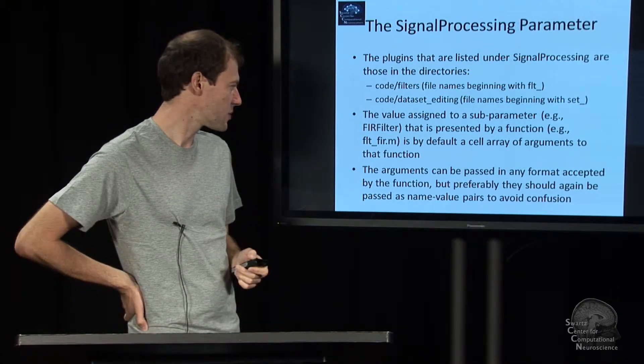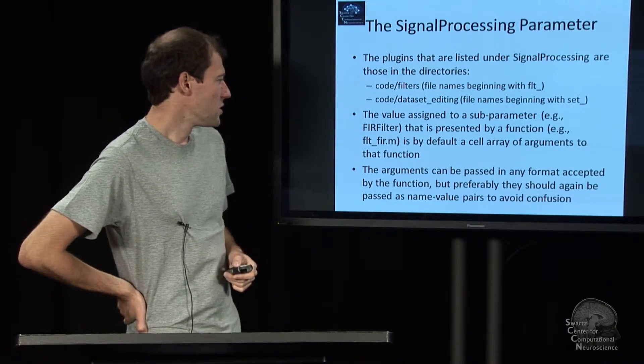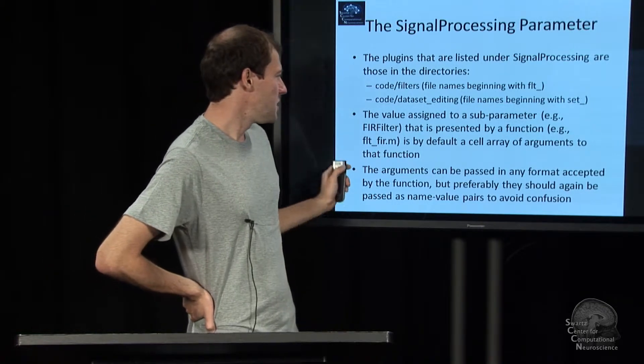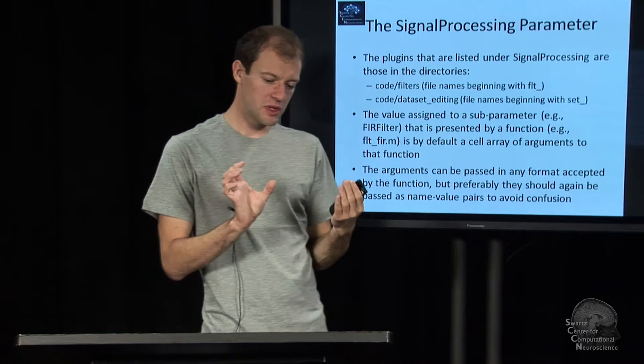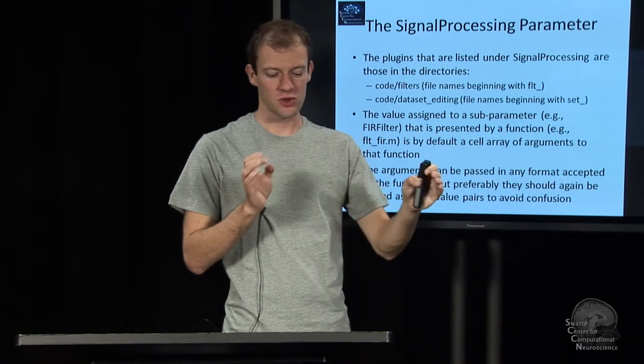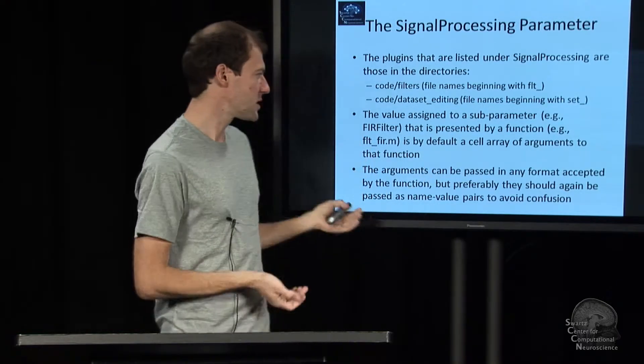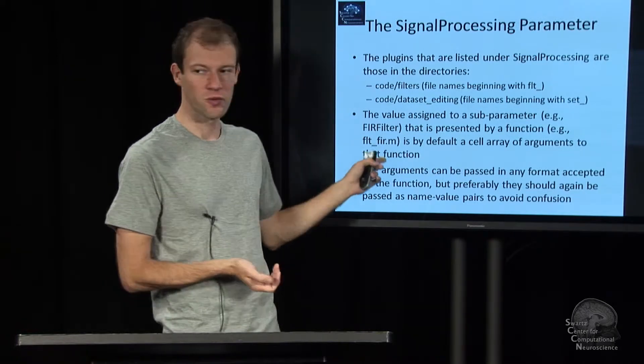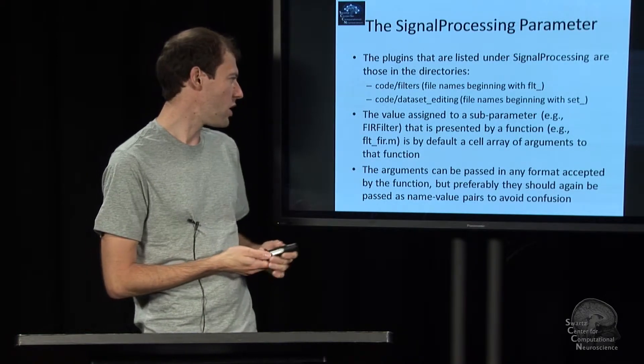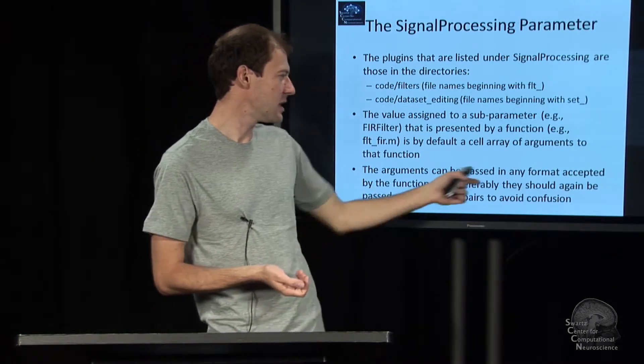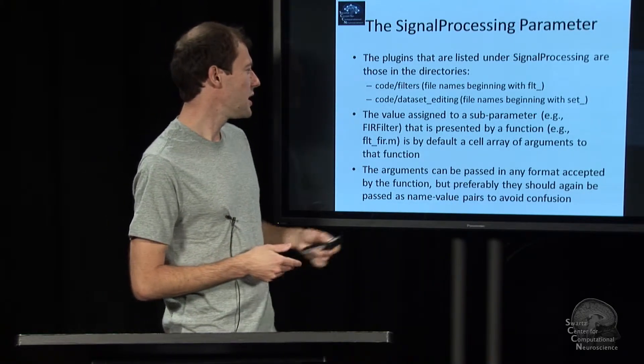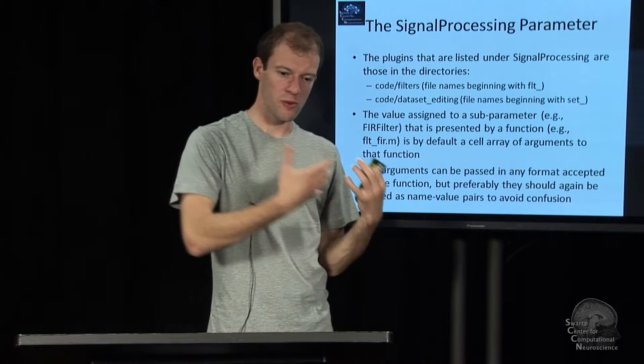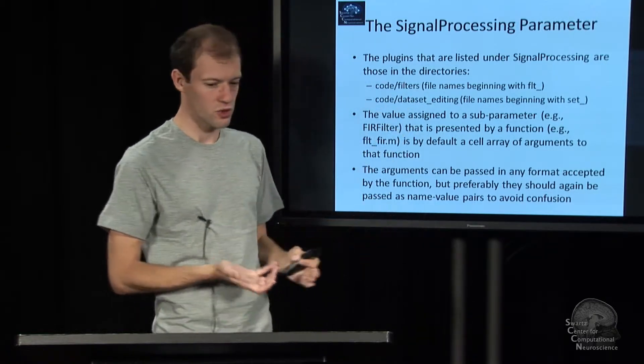The parameters that you assign to a subparameter is basically just directly the parameters that this function would be able to take. All of these by default accept name value pairs as documented and so on, so you can also start and bootstrap yourself from the scripts and from these folders to know what you want to pass in and skip the GUI if you want to.